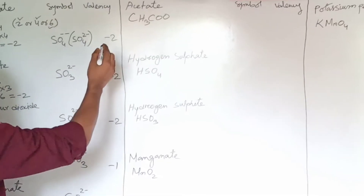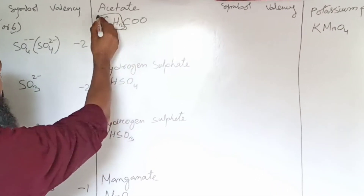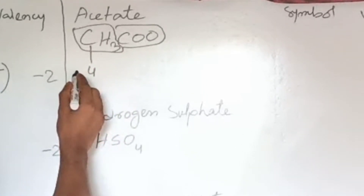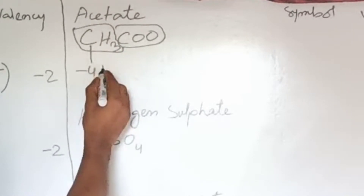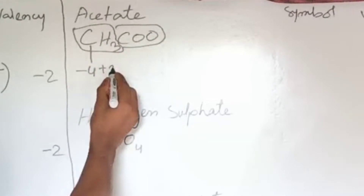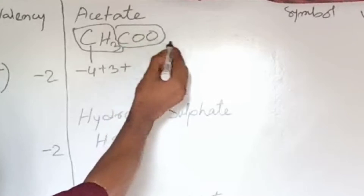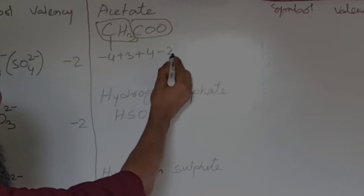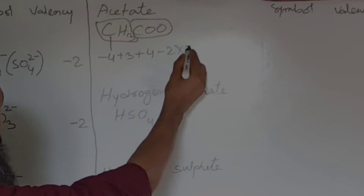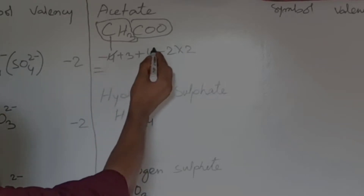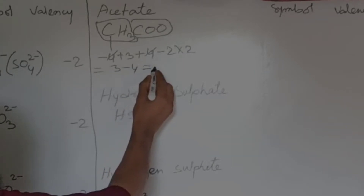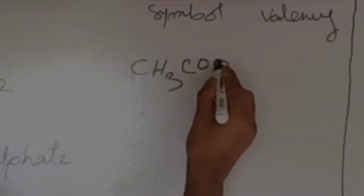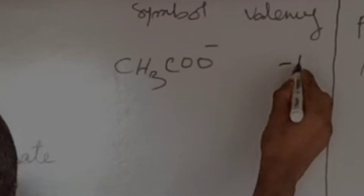Now let's see acetate — there are two groups here. In the first group, carbon valency is 4 and it is electronegative due to the presence of electropositive hydrogen. Hydrogen valency is 1, three hydrogen atoms give plus 3. In the ester group, carbon valency is 4, oxygen is electronegative with valency 2 and two oxygen atoms. So 4 plus 3 minus 4 minus 4 gives minus 1. Its symbol is CH3COO 1-minus.